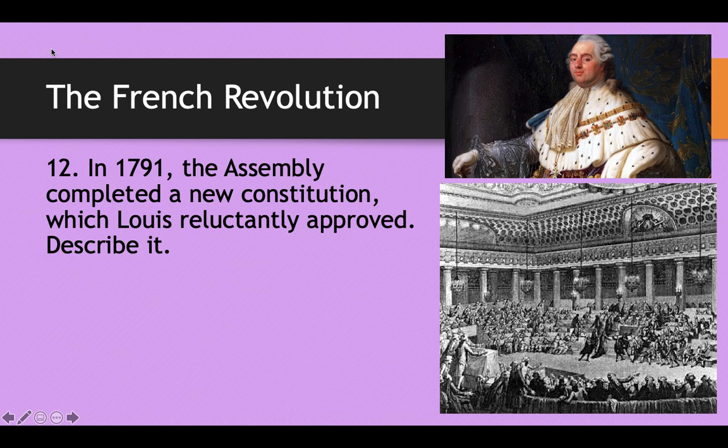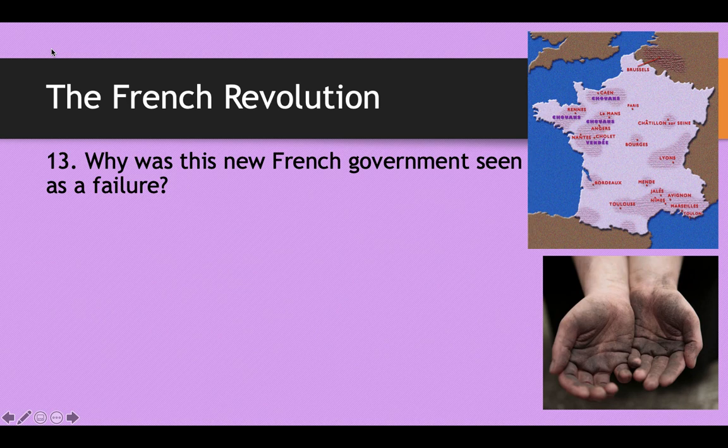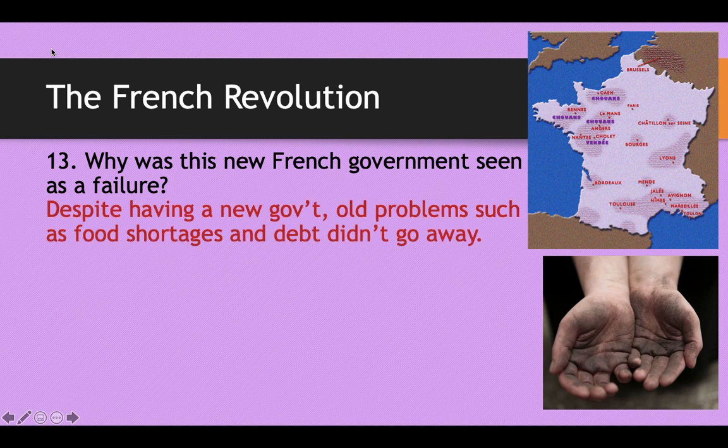In 1791, the Assembly completed a new constitution, which Louis was essentially forced to approve since he was a prisoner of Paris. This created a limited constitutional monarchy — it stripped the king of much of his authority but he kept his title. It created the Legislative Assembly, similar to Congress or Britain's Parliament, with the right to make laws and declare war. But this new government was seen as a failure because the old problems — food shortages and debt — didn't go away.